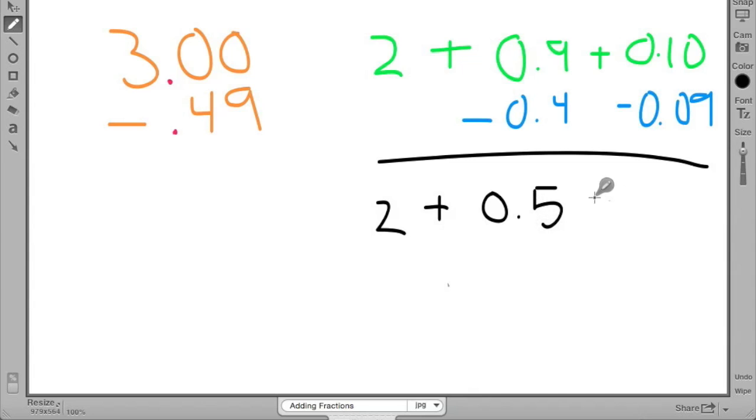Now, I get my partial differences, and I have 2 plus 5 tenths plus 1 hundredth. My final answer will be 2 and 51 hundredths.